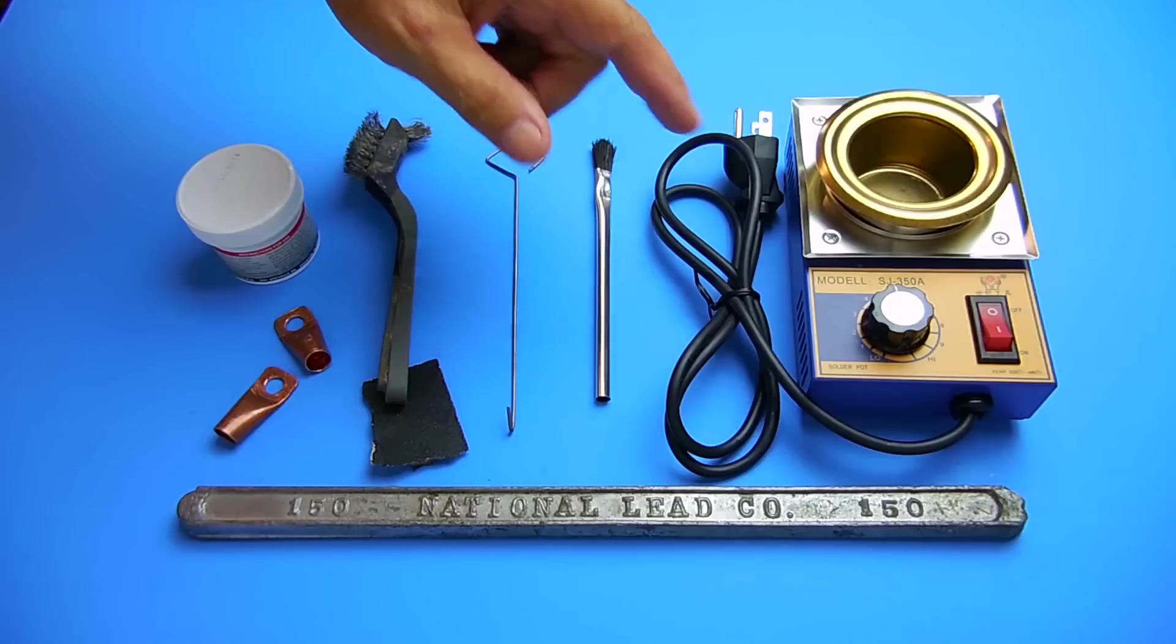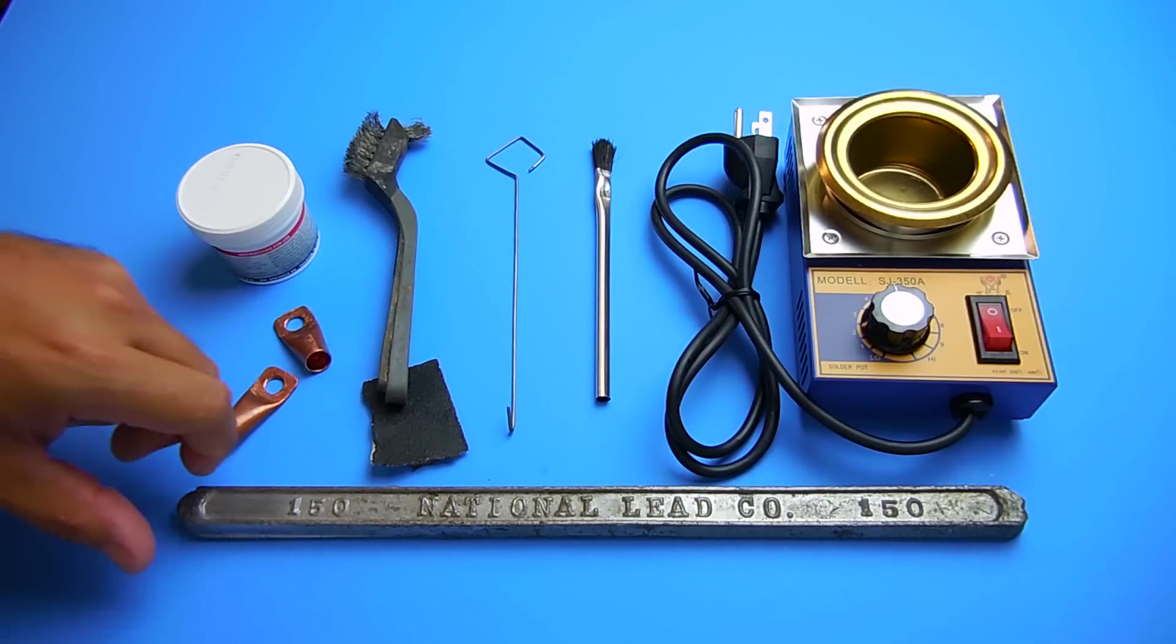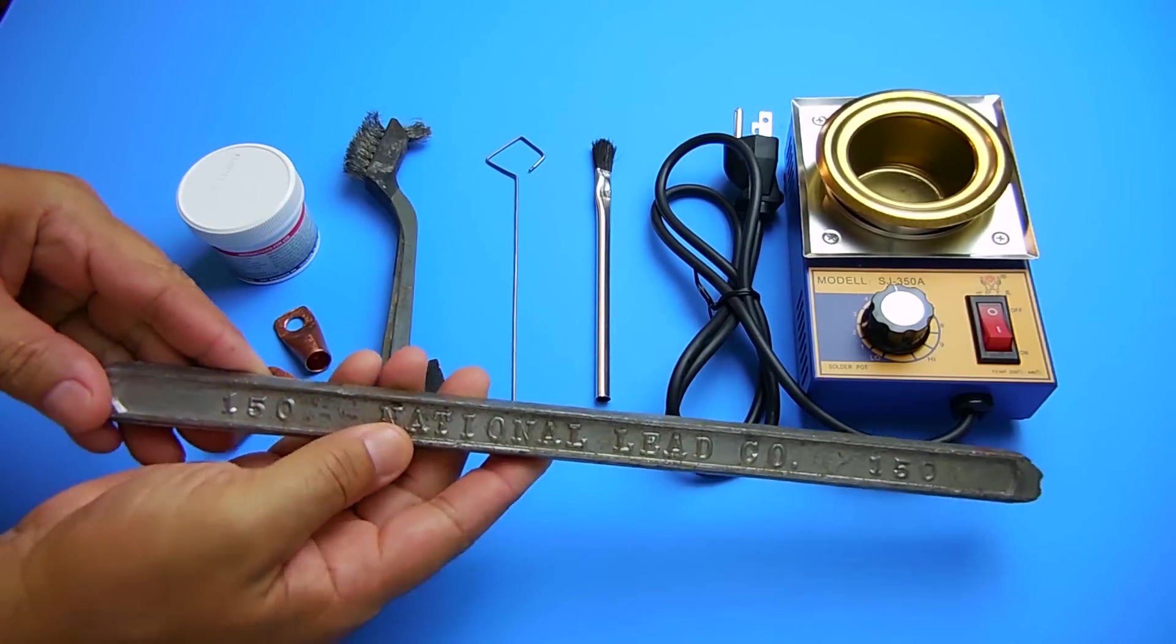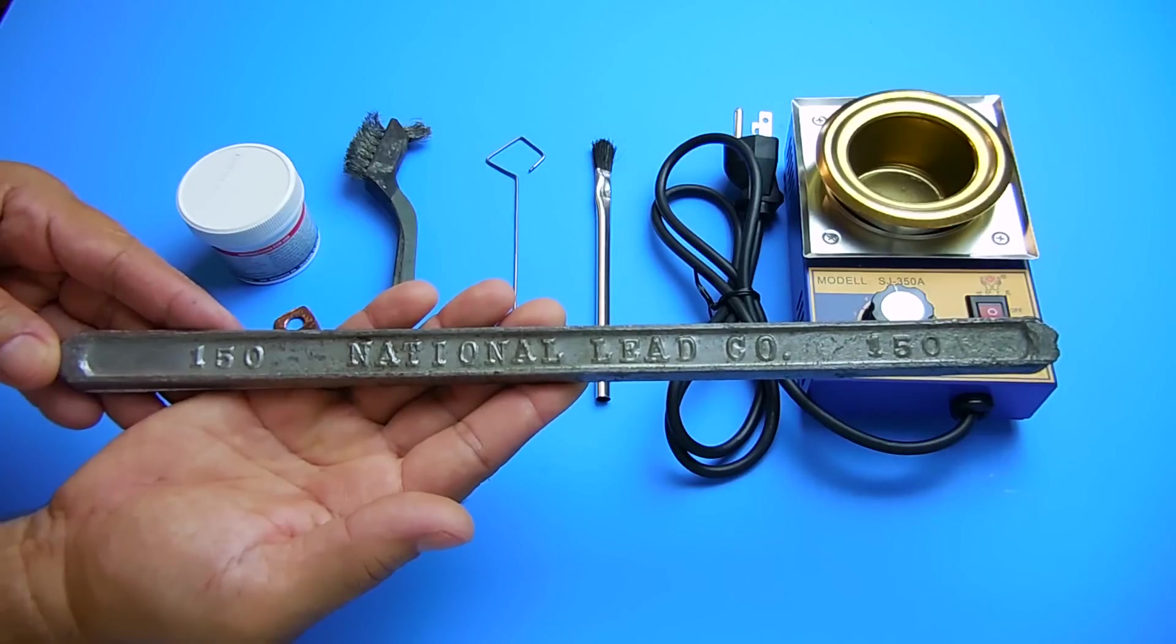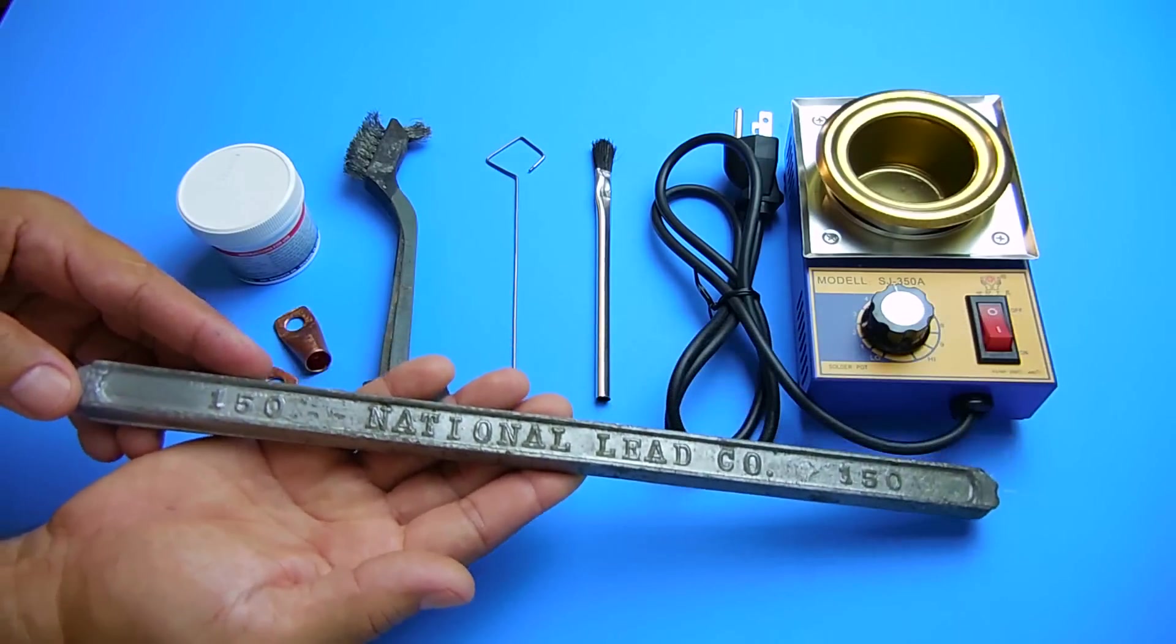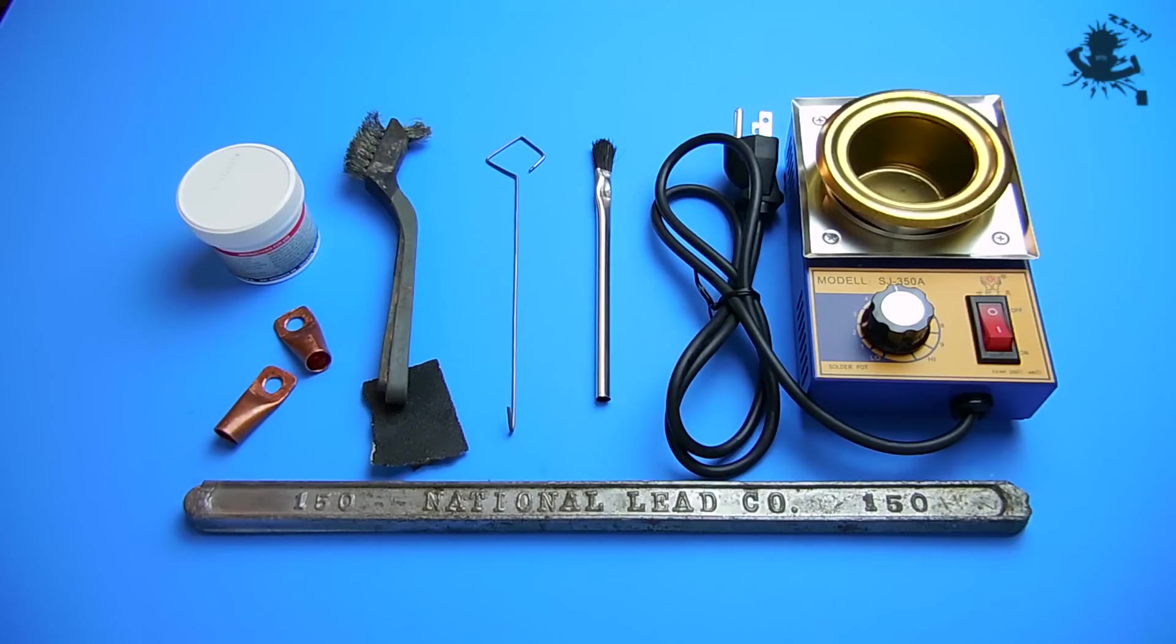A friend of mine gave me this bar which is made by National Lead Company. They made a lot of different alloys and the company started way back I think in the late 1800s and lasted all the way to around 1970 when it was either bought out by another company or went out of business. This is a very old bar. I have been doing this for a very long time, for about 20 years, making these connectors as well as tinning them.